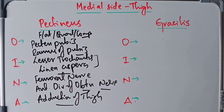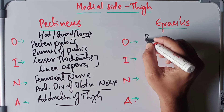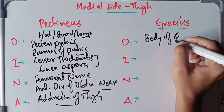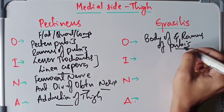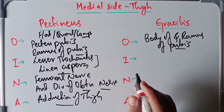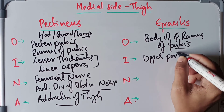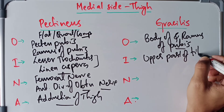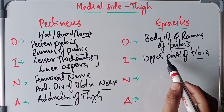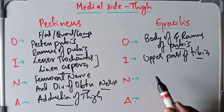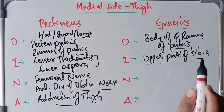The gracilis originates from the body and ramus of the pubis bone. It is inserted into the upper part of the medial surface of the tibia, between the insertions of the sartorius and semitendinosus — though simply remembering it inserts into the upper part of the tibia is sufficient.